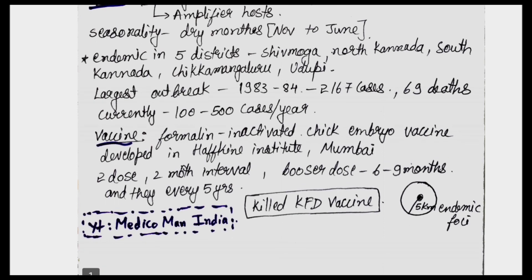A vaccine is available for Kyasanur Forest Disease — a formalin-inactivated chick embryo vaccine developed at the Haffkine Institute, Mumbai. It is a 2-dose vaccine taken with an interval of 2 months, with a booster dose given 6 to 9 months later and then every 5 years. The KFD vaccine is given in endemic foci — for example, within 5 kilometers if any outbreak occurs.